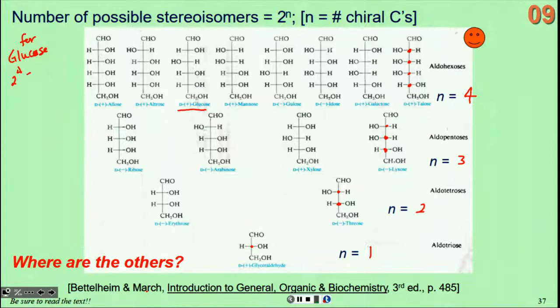Two to the fourth is two times two times two times two. That is 16, but there's not 16 shown here. Where are the rest of the isomers? I hinted at it before. All of the ones shown here are D isomers. So there's eight here. Eight are D isomers. The other eight are L.